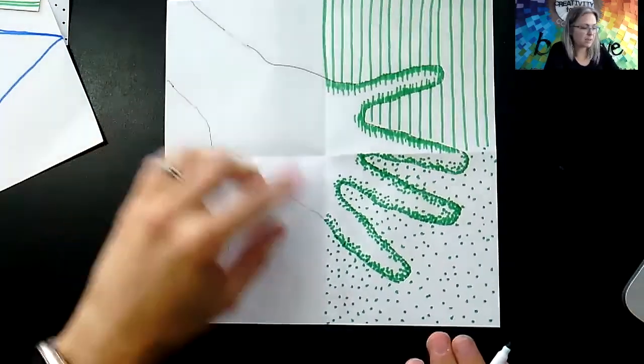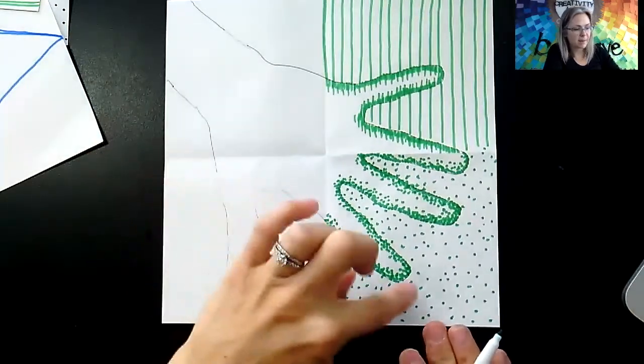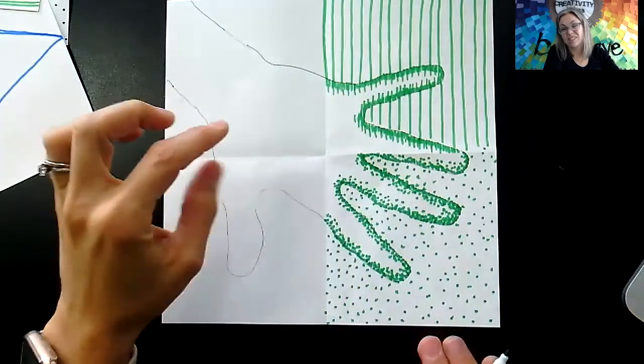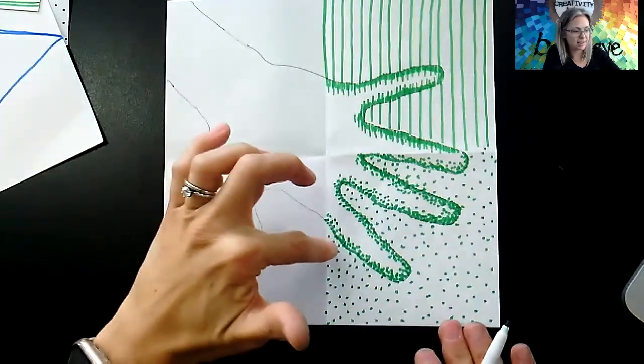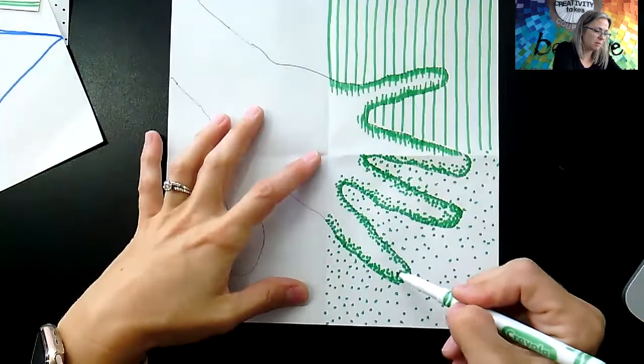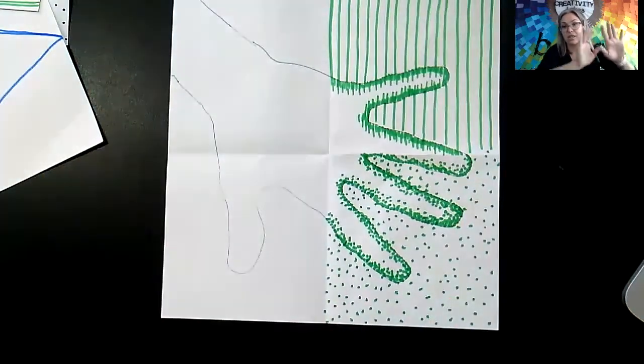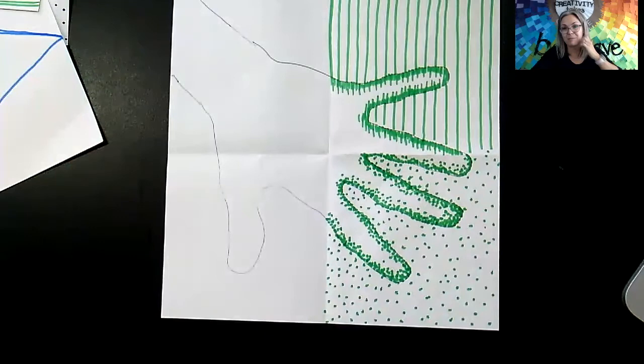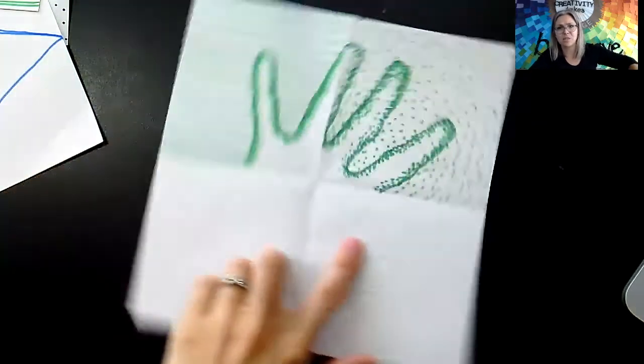I finished the stippling here. You can see that I went all around the edge with a nice, dark, solid set of dots and then kind of let them come in slightly to create the medium value. And then all around the outside, I just created an even scattering of dots to create a medium value. I'm going to rotate this so I can work up here.